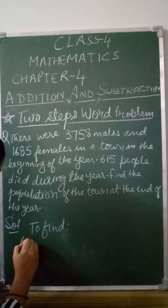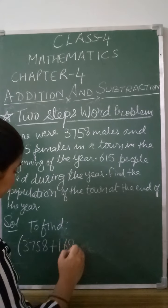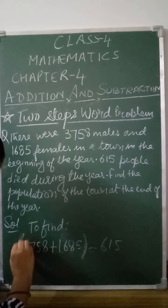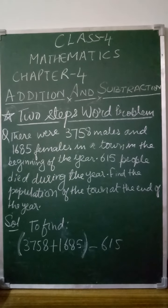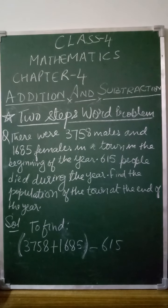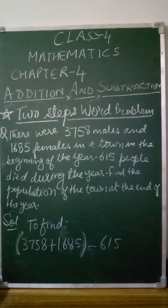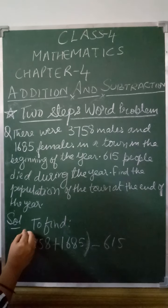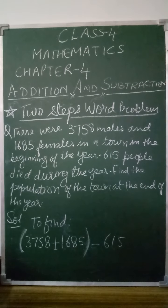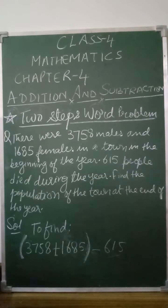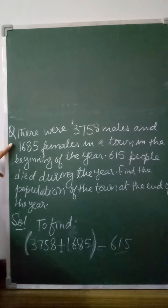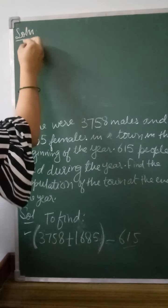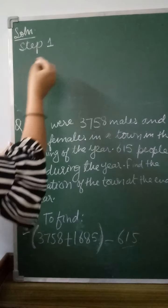This is a combined operation. First we find the total number of people in the town, then we subtract those who died. So the expression is: (3,758 + 1,685) - 615. We use brackets to indicate which operation comes first — the bracket means solve this addition first, then take the difference.